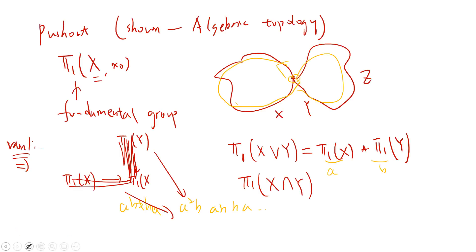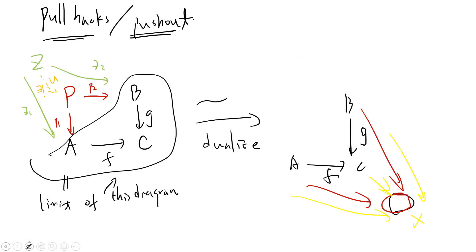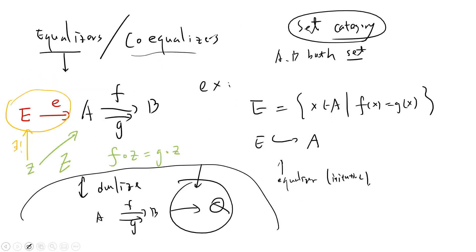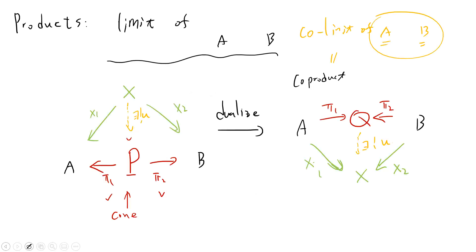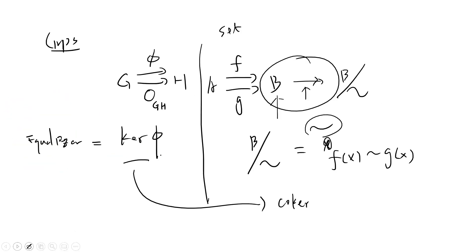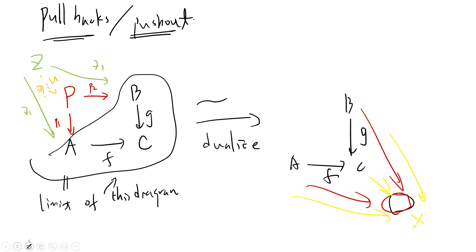Welcome everyone. Previously we talked about pullback, pushout, equalizer, co-equalizer, product, and co-product. These are all category constructions that come from the limit and the co-limit.